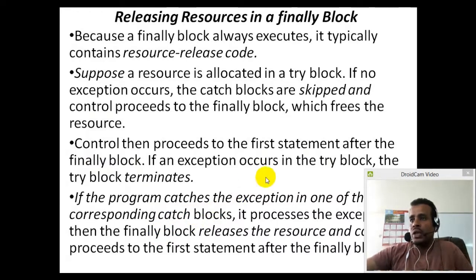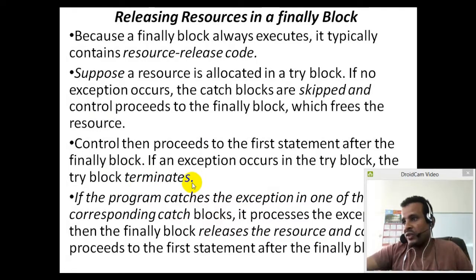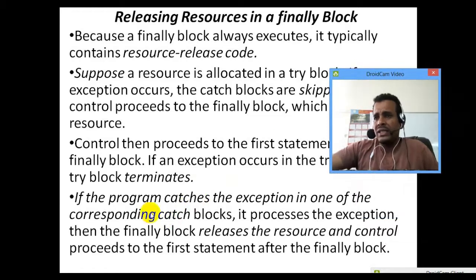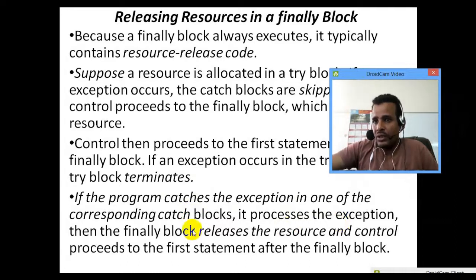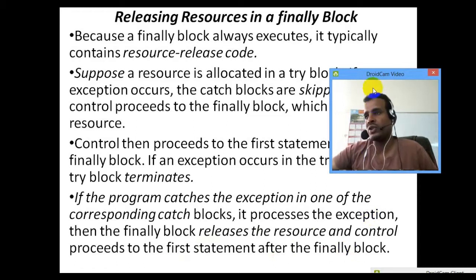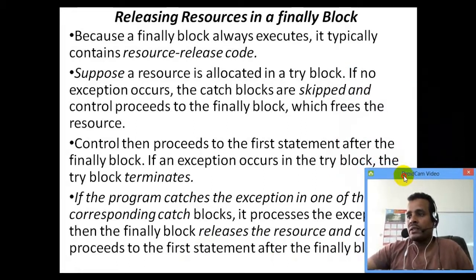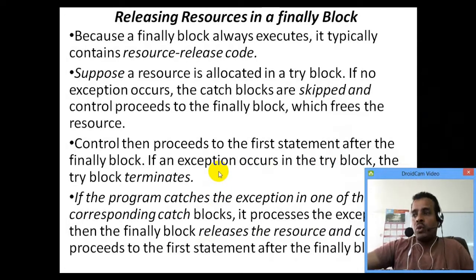Control then proceeds to the first statement after the finally block. If the program catches an exception in one of the corresponding catch blocks — such as arithmetic exception — it processes the exception, then the finally block executes.